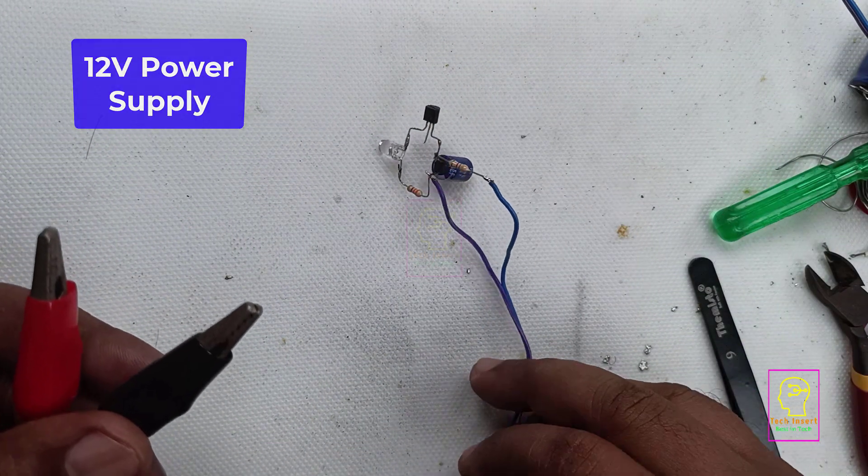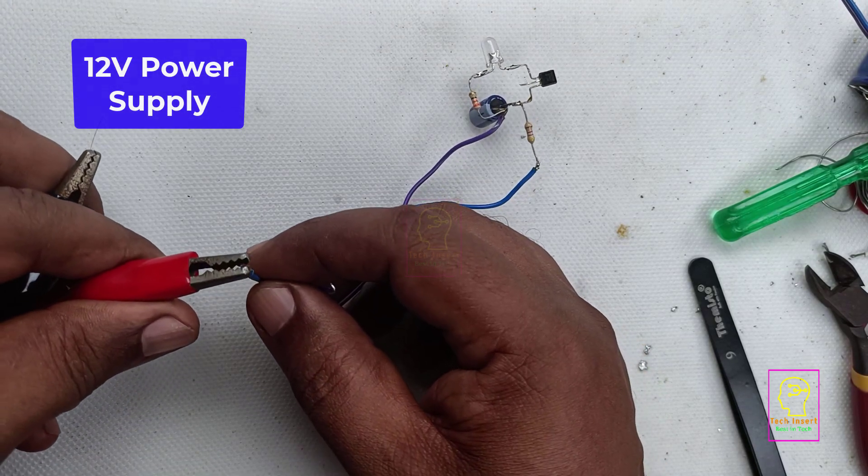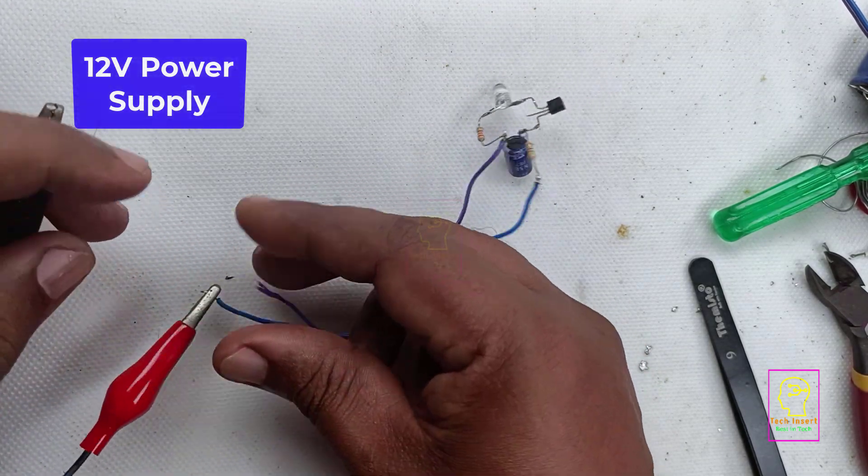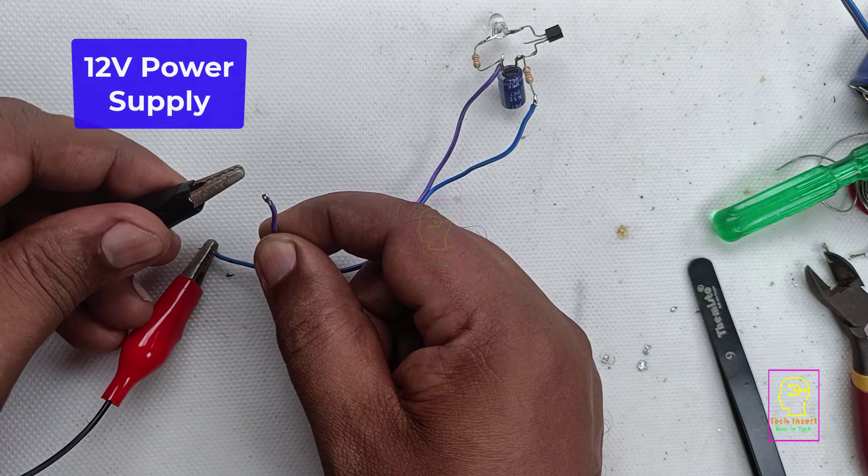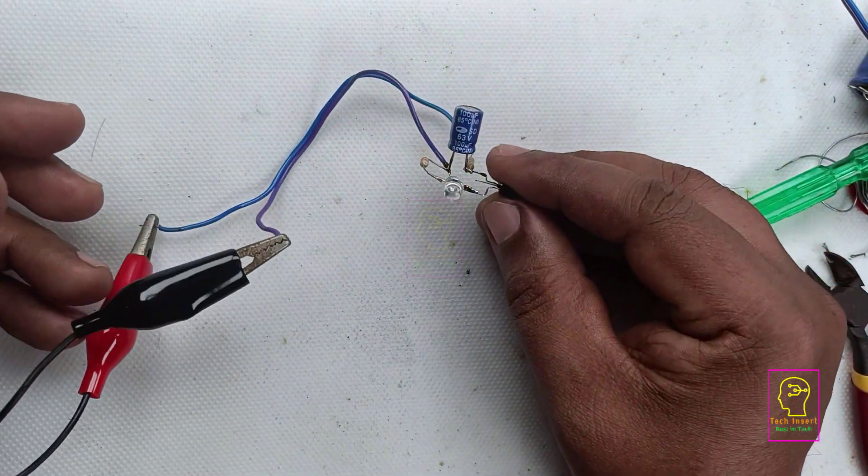Let us test this circuit using a 12 volt power supply. Please keep this in mind that the power supply should be higher than the threshold voltage of the transistor. The moment I connected the power supply the LED starts flashing.